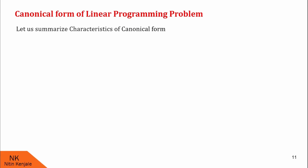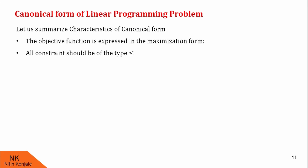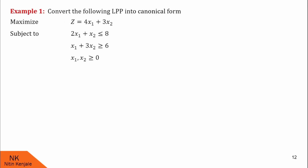Now, let us summarize these characteristics of canonical form. First, the objective function is expressed in maximization form. Second, all constraints should be of the type less than or equal to. And third, all the variables should be non-negative. Now, let us see examples on canonical form. In the first example, we are asked to convert the following LPP into canonical form.